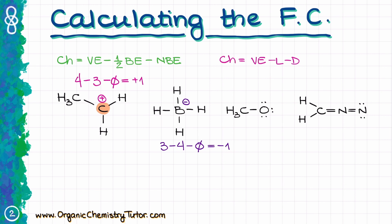Then for the oxygen atom: oxygen has six valence electrons because it's in the sixth group of the periodic table, minus one bond connecting it to carbon, minus six dots around it, giving an overall charge of negative one. For the last molecule, let's look at all the core atoms. For the carbon: four valence electrons minus four lines minus zero dots gives a charge of zero. I don't have to show a charge of zero on carbon, but I'll show it here for completeness.